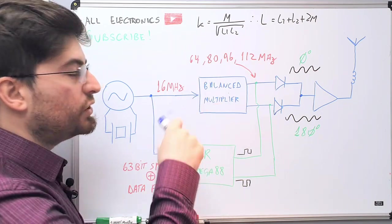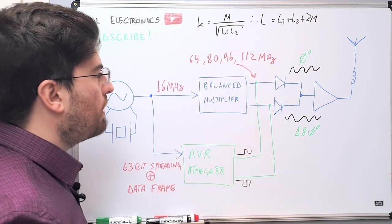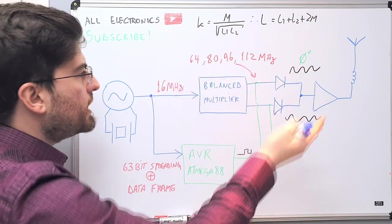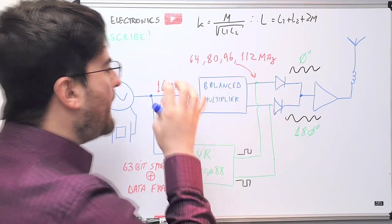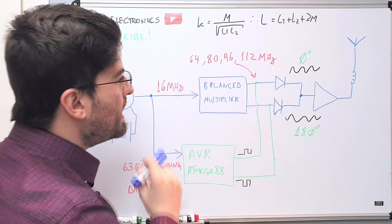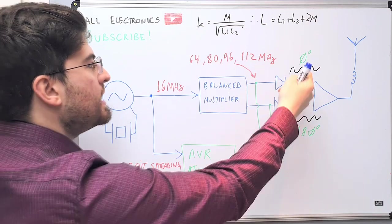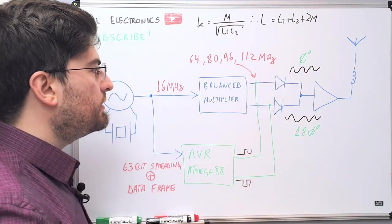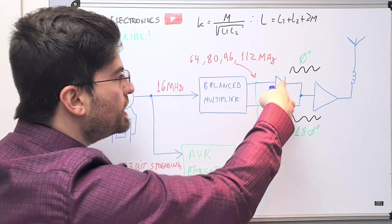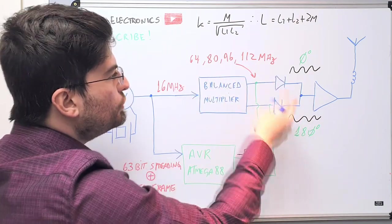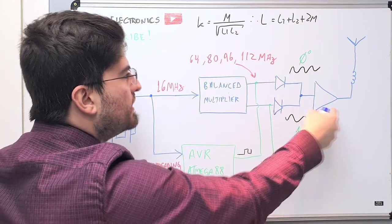The 16 megahertz signal is fed to a balanced multiplier that multiplies this base frequency. We can choose the harmonics, tuning the multiplier to multiply the signal to 64, 8, 96, or 112 megahertz - all these values are harmonics of 16 megahertz. I had this breakthrough idea of using a balanced multiplier where the multiplier already outputs two different phases. In this case for BPSK, zero degrees and 180 degrees. So if the multiplier already outputs two phases, we can use two diodes as switches to choose what phase we are going to transmit.